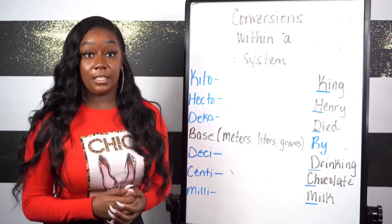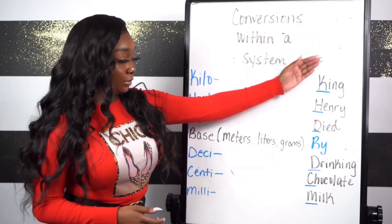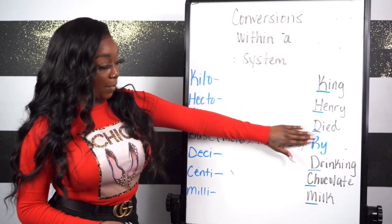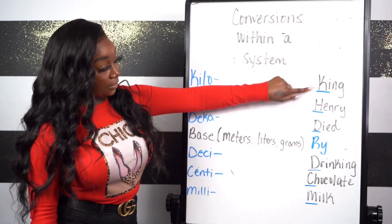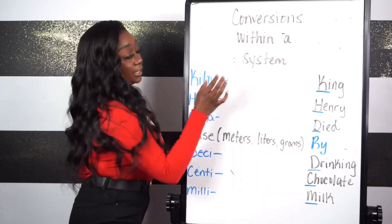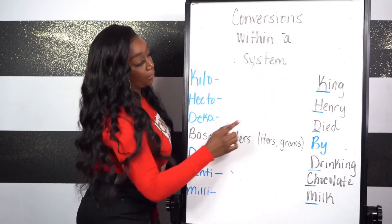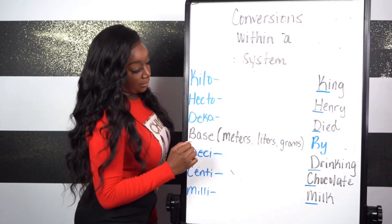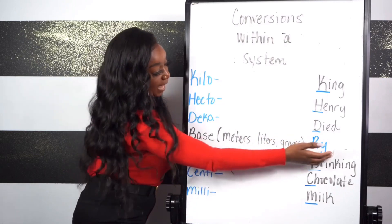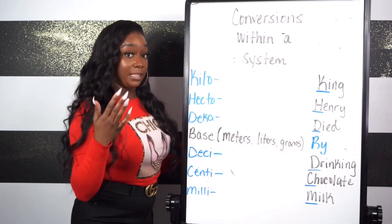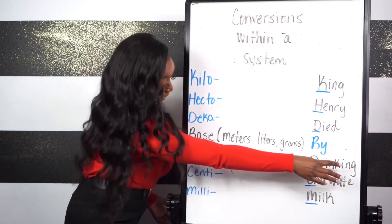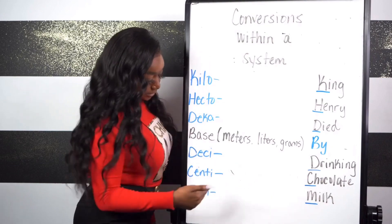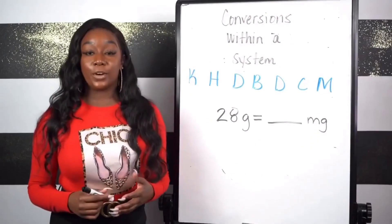In order for you guys to memorize these particular prefixes, we're going to use this acronym: King Henry Died By Drinking Chocolate Milk. The first letter of each word corresponds to the prefixes — King is kilo, Henry is hecto, Died is deca, By represents any of our bases (it's interchangeable), Drinking is deci, Chocolate is centi, and Milk is mili.